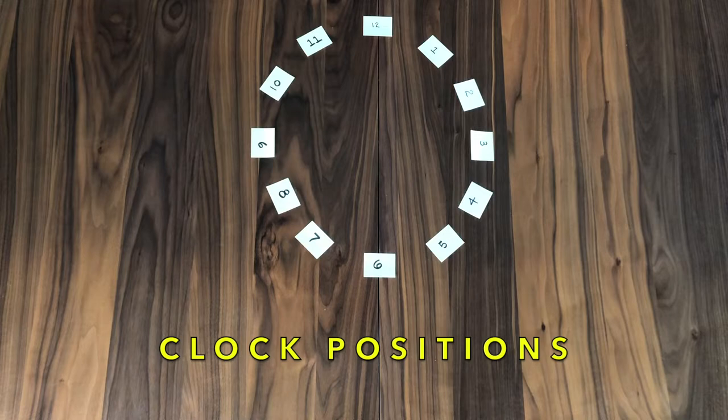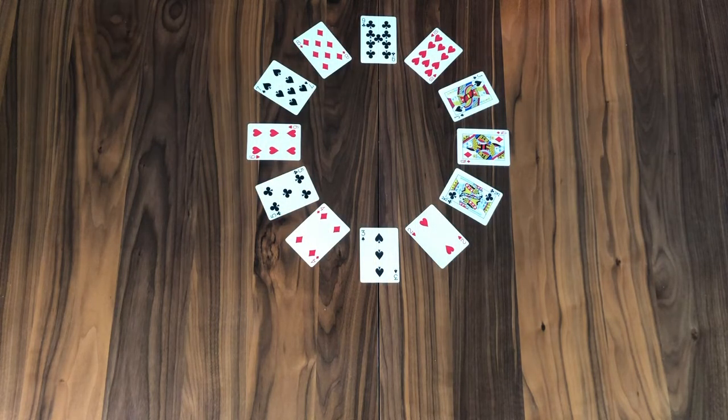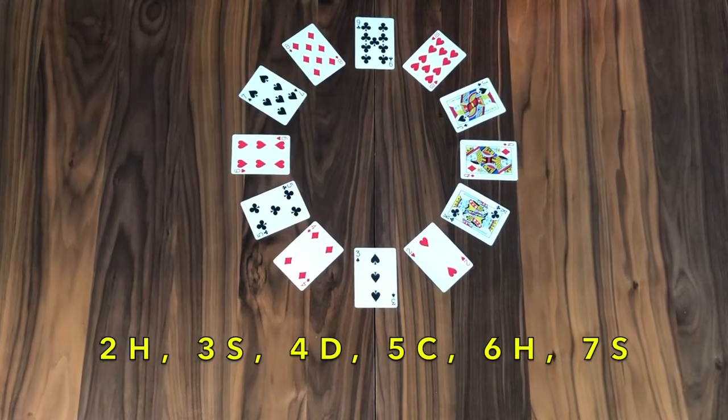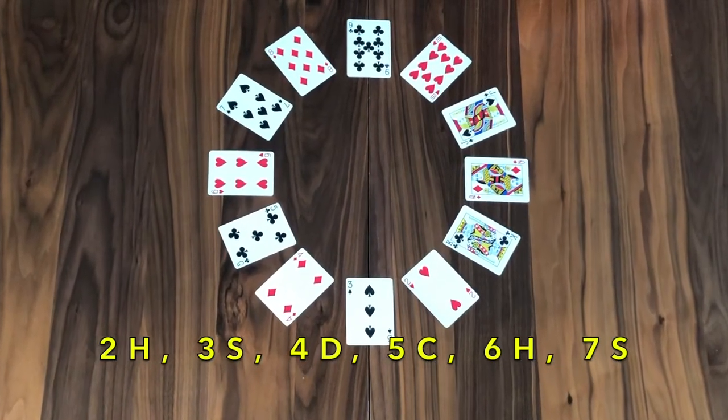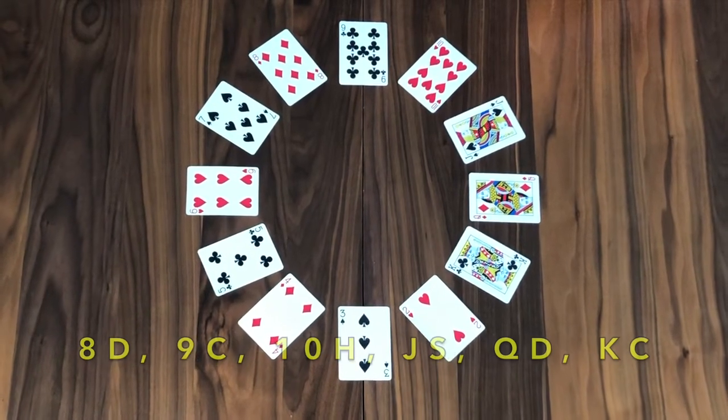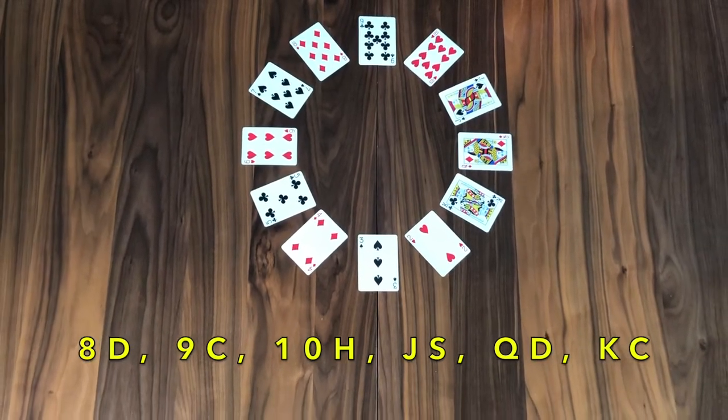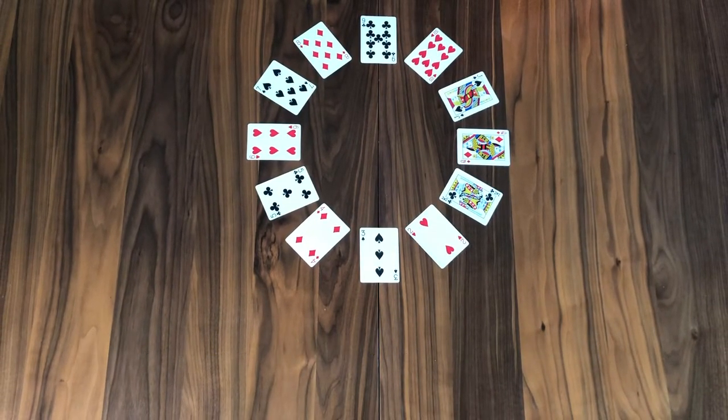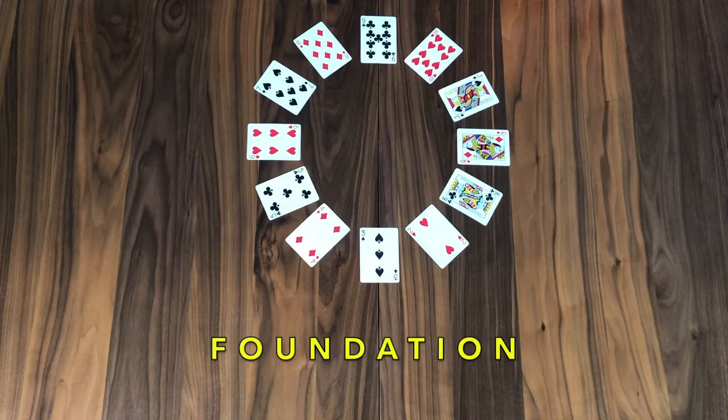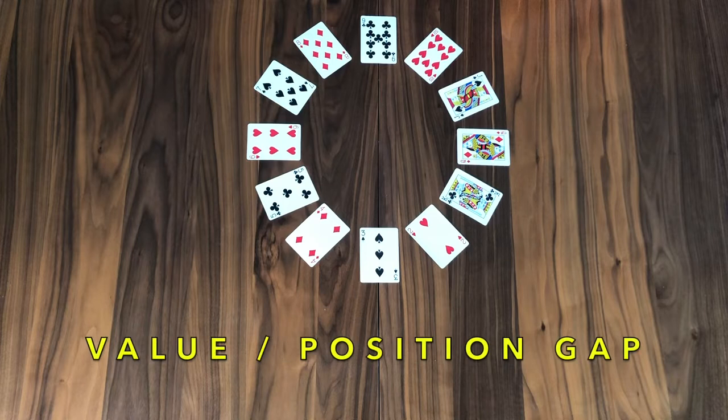Imagine your table has the clock positions with 12 at the top and 6 at the bottom. Your job is to pull from the pack very specific cards: two of hearts, three of spades, four of diamonds, five of clubs, six of hearts, seven of spades, eight of diamonds, nine of clubs, ten of hearts, jack of spades, queen of diamonds, and king of clubs. You're going to arrange them in a foundation in a certain way, and you'll notice that the value of the card differs from the position on the clock.